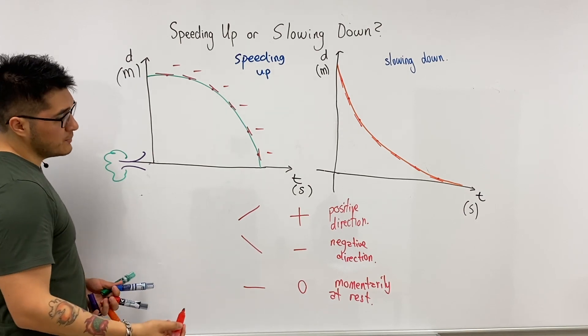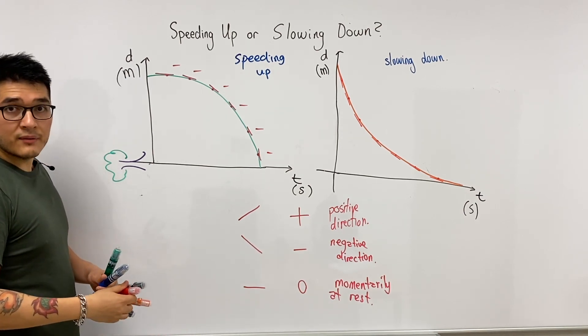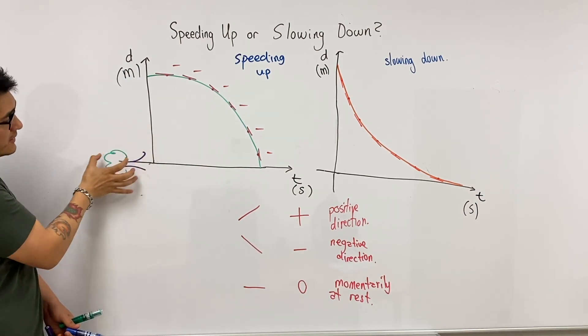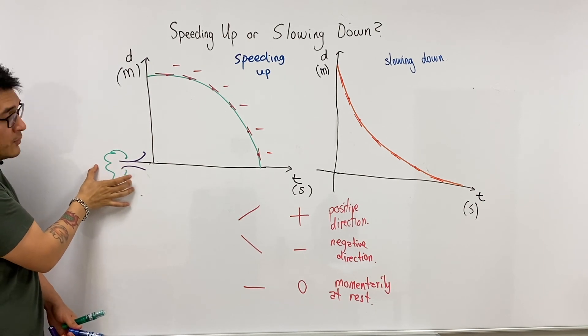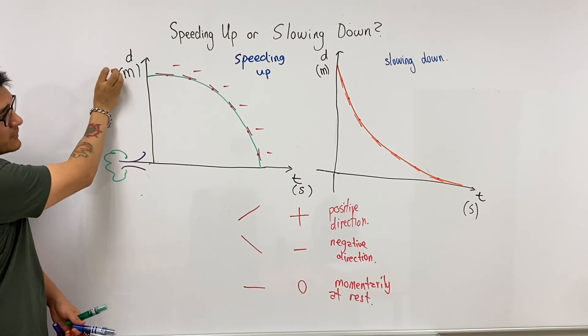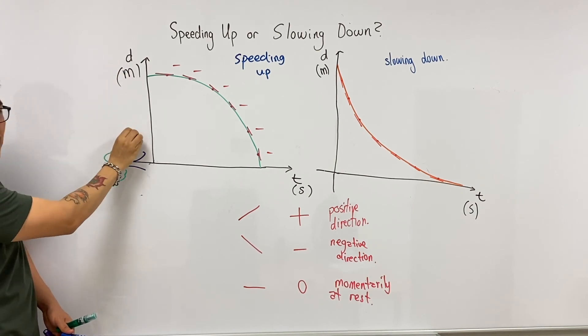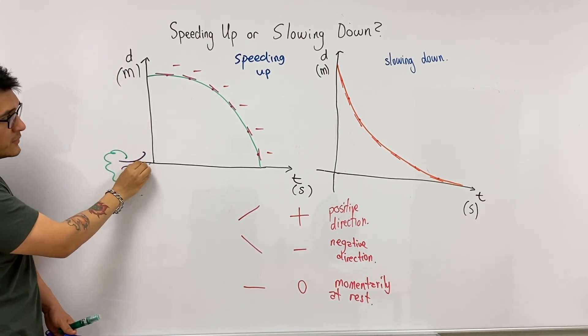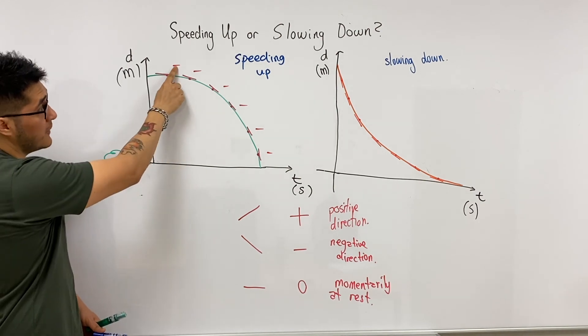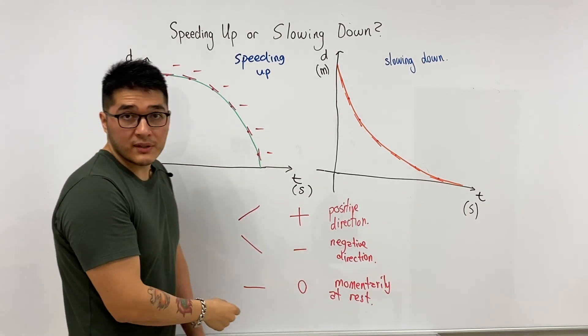And the object is moving in the negative direction, which makes sense because if you consider the tree as the origin, the cheetah starts some distance away from the tree to the right and moves in the negative direction towards the tree. So that makes sense.